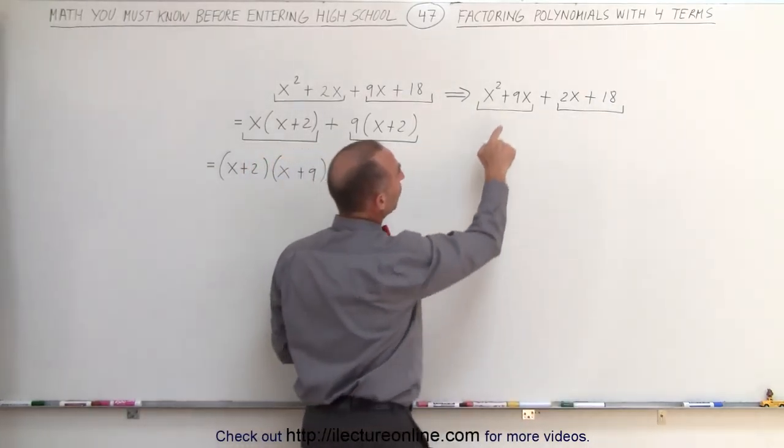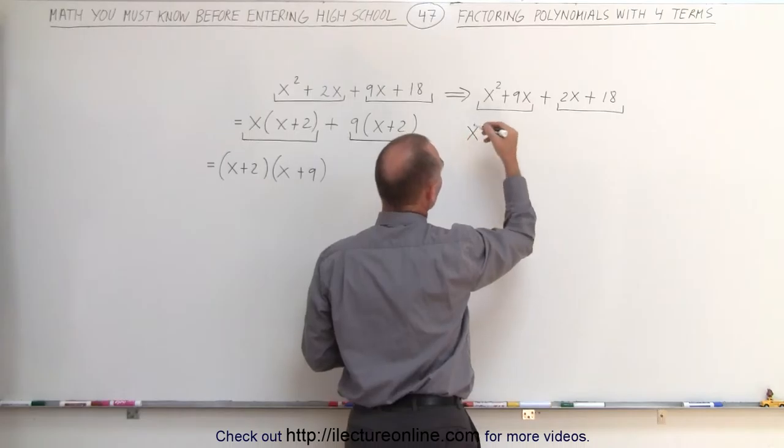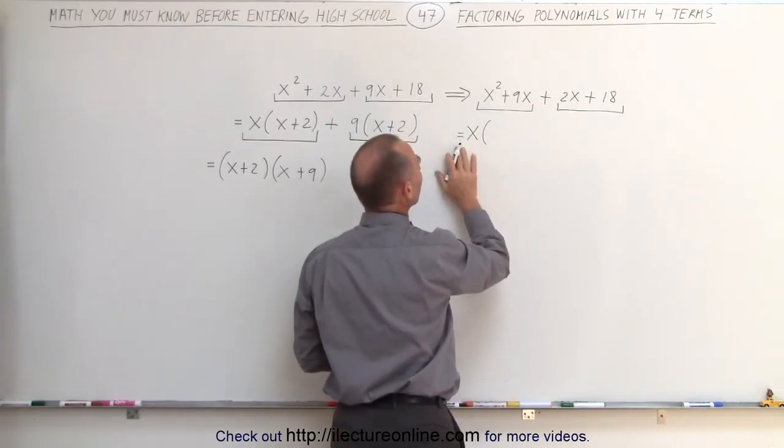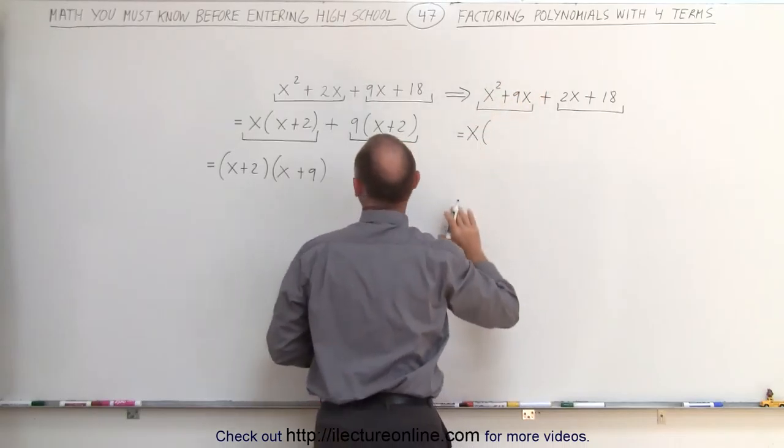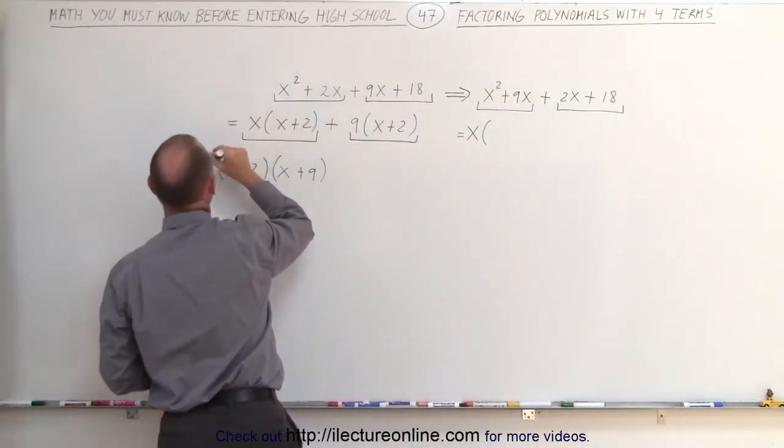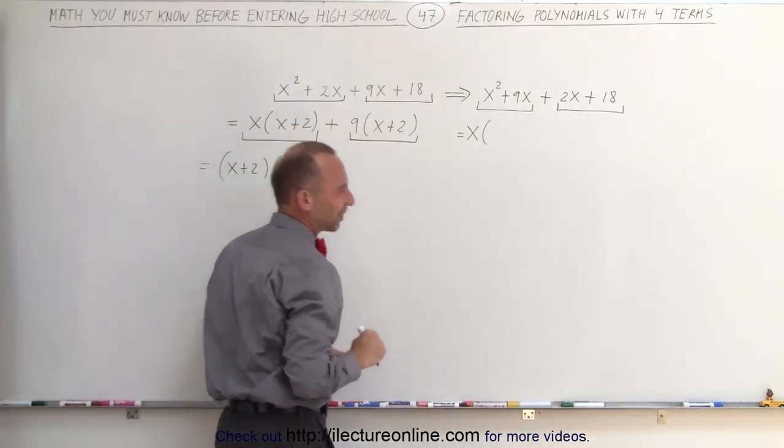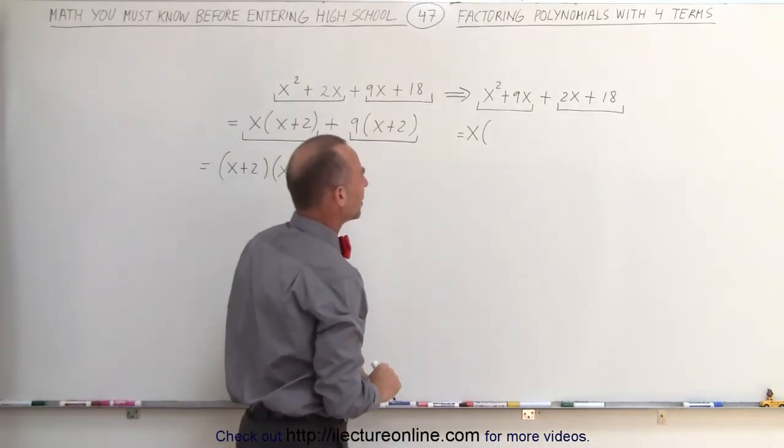What is common in the first group? Again, the variable x is common. Let's put an equal sign here just to make sure we understand that these are equal. This is equal to this, which is equal to that. It's better form. It's bad form not to put equal signs there.